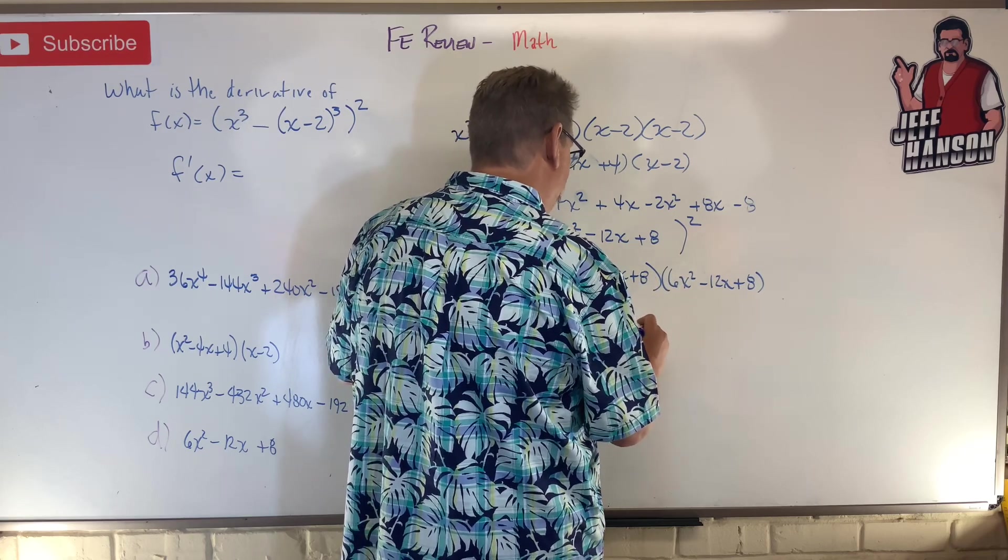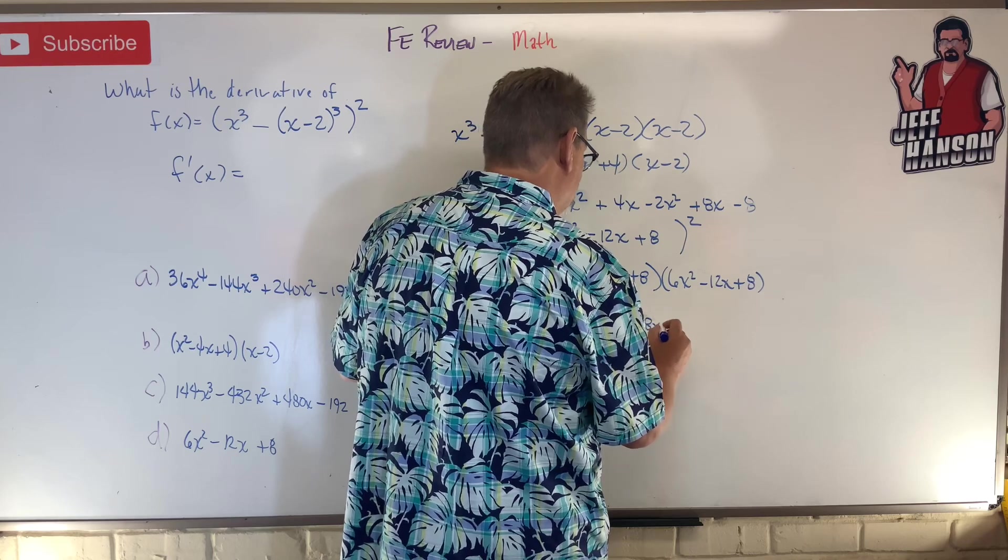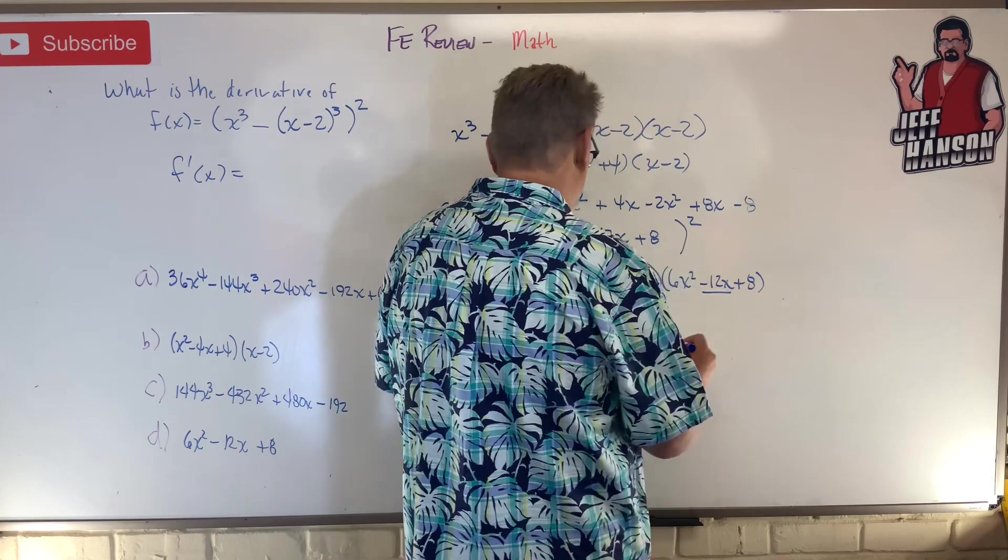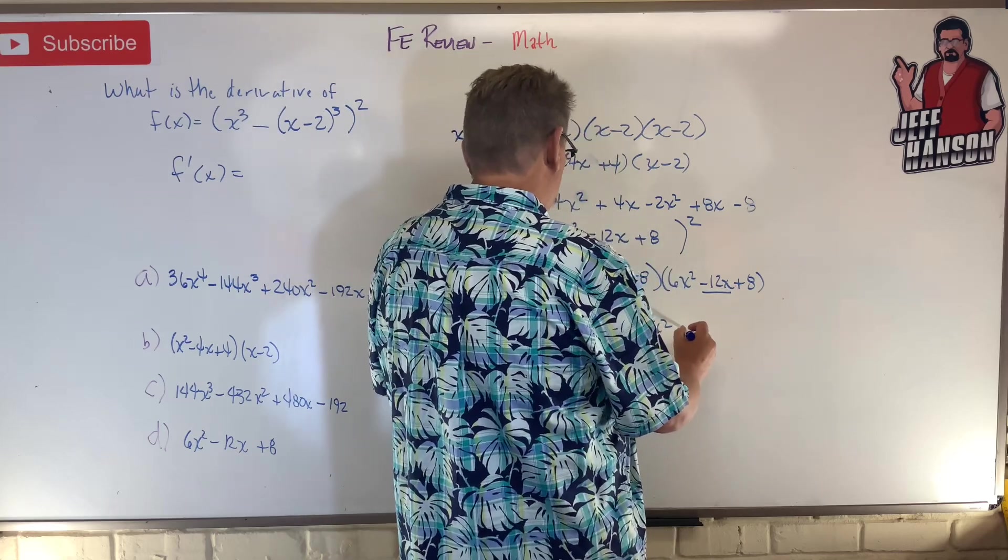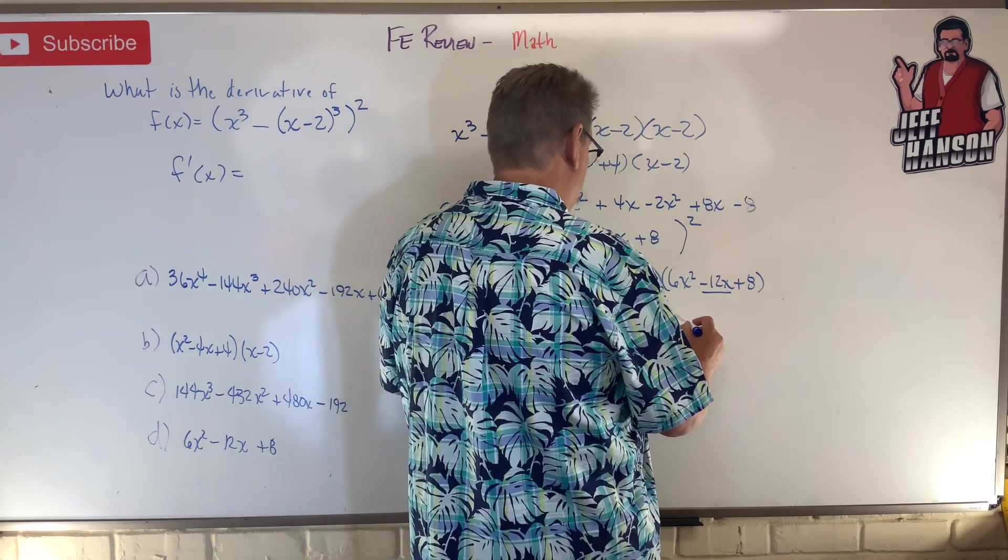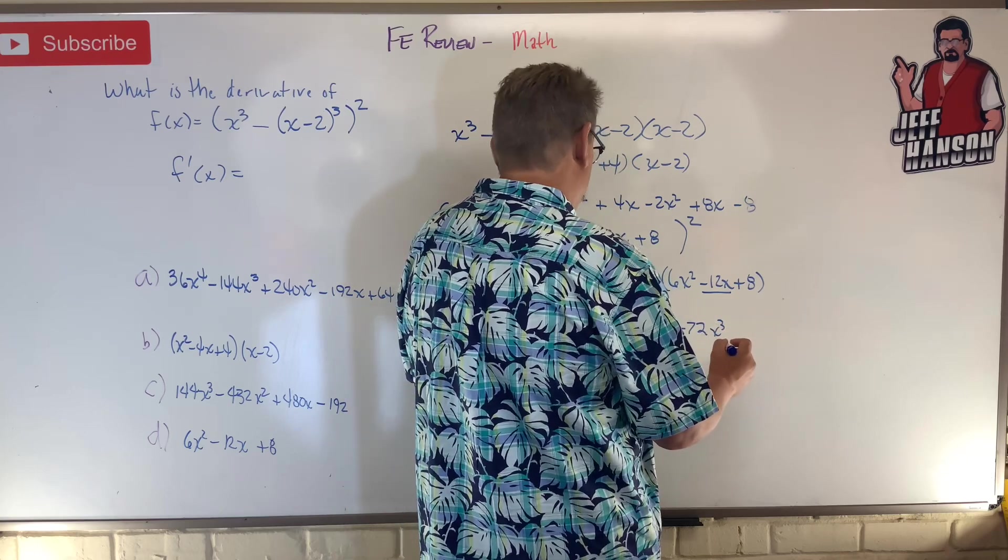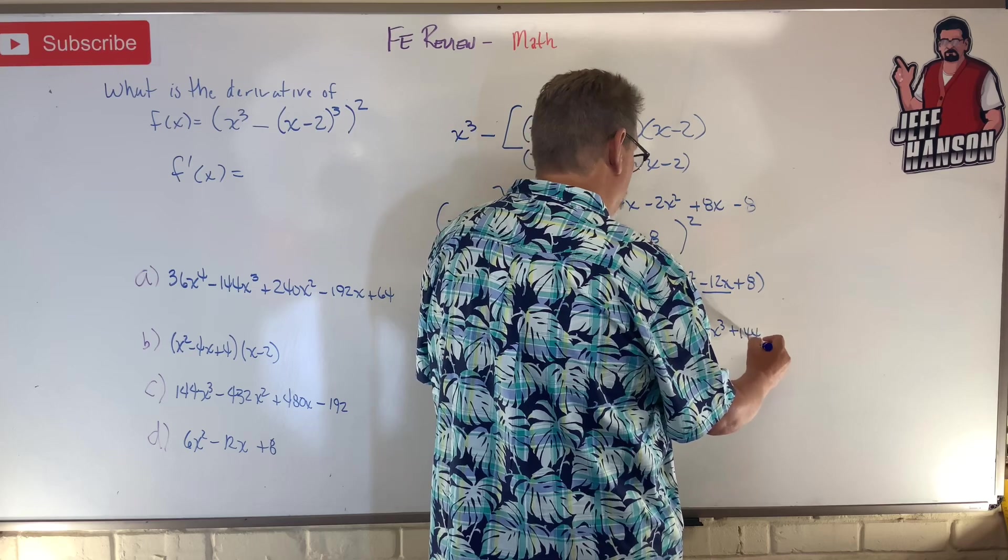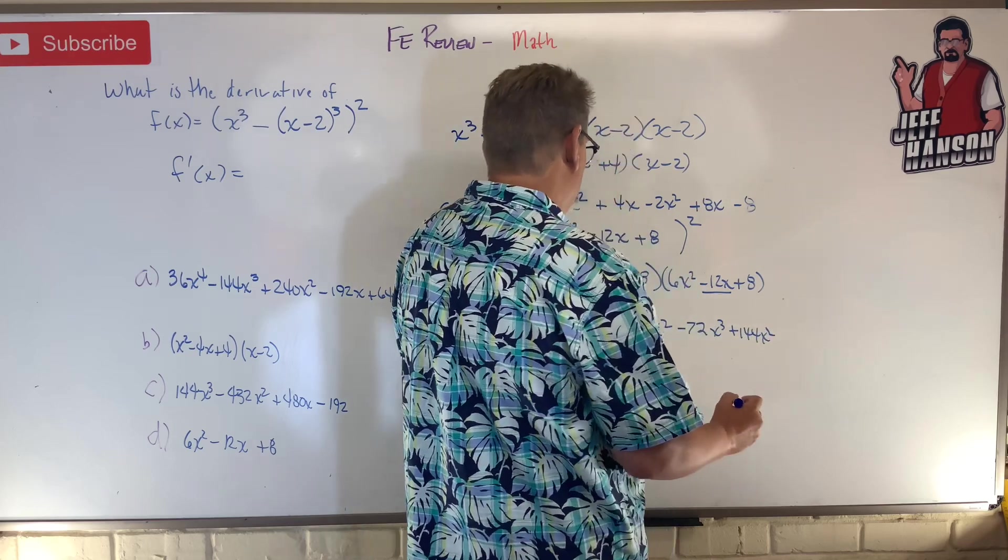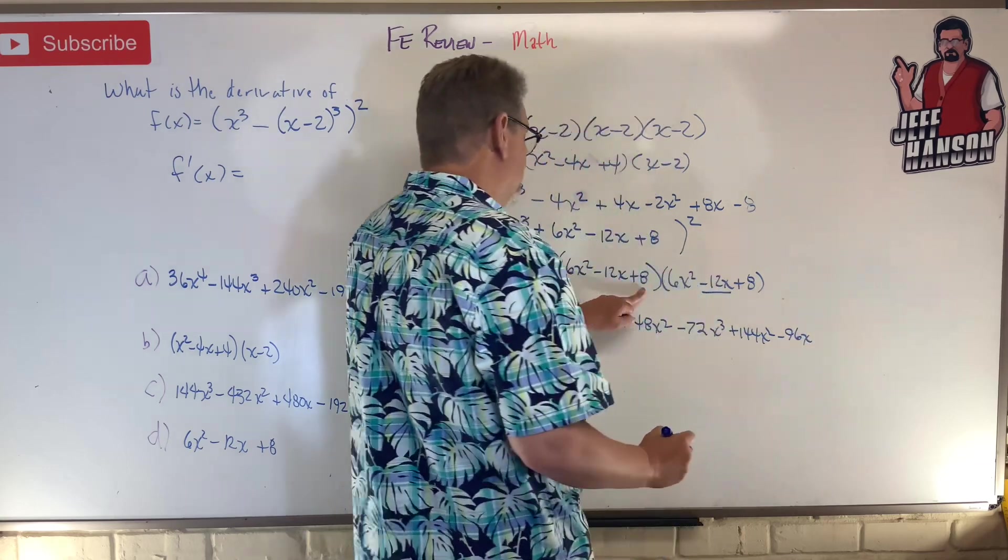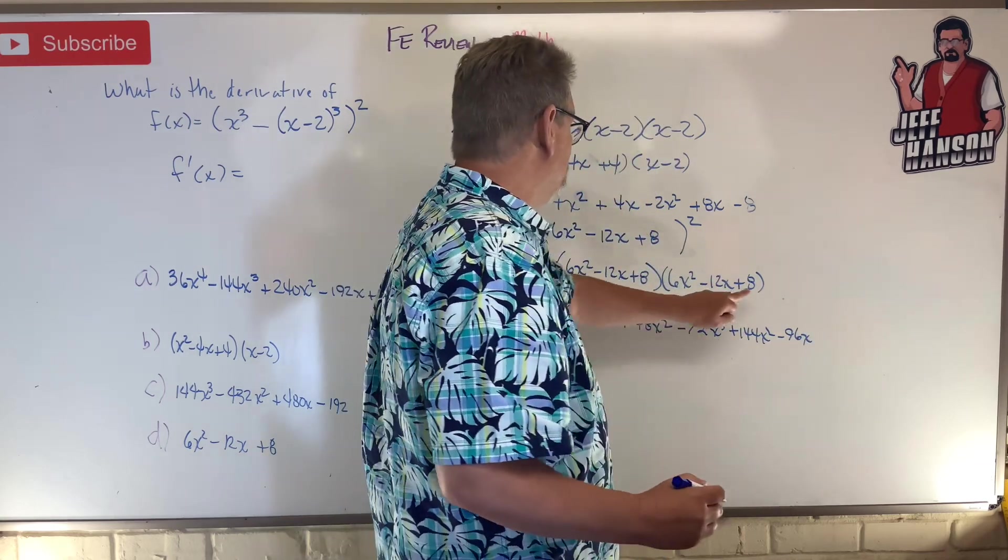So -12 times 6 is -72x³, and then +144x², and then -96x. Then the last one is multiplied by everything through by the 8.